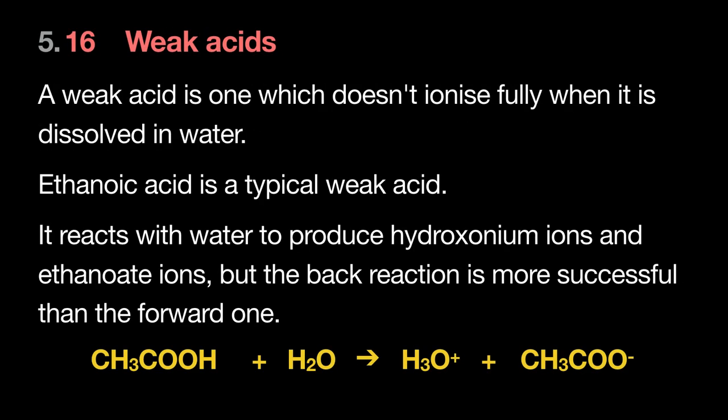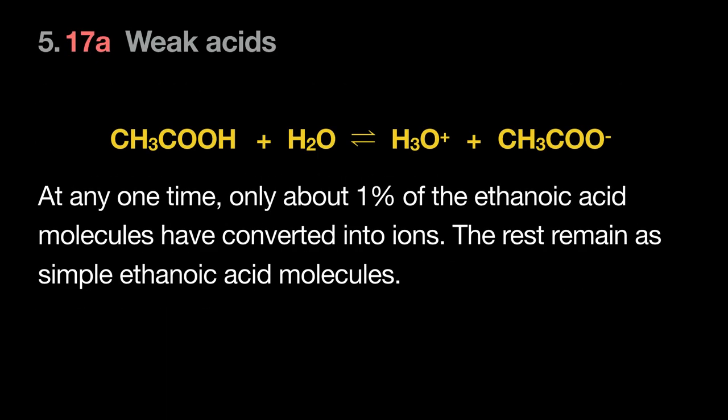Now we move to weak acids — the math is different here. Weak acids don't completely ionize; they establish an equilibrium. To find the pH of a weak acid we need to measure the equilibrium position, which we do using Kc — specifically Ka for acids. Most organic acids are weak; ethanoic acid ionizes only about 1%. We'll continue this next class.